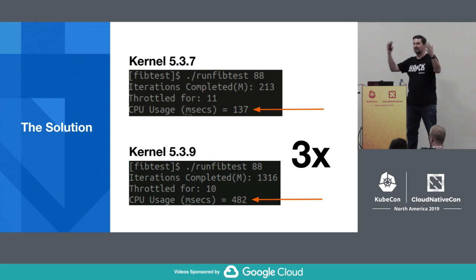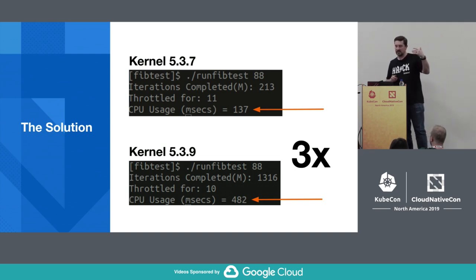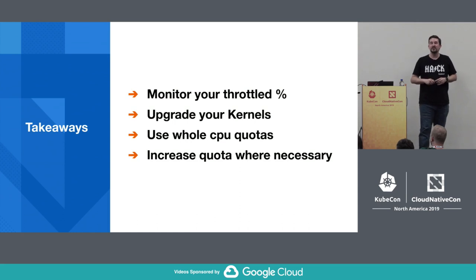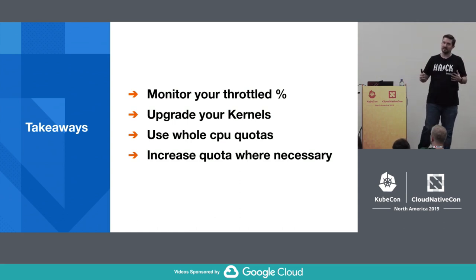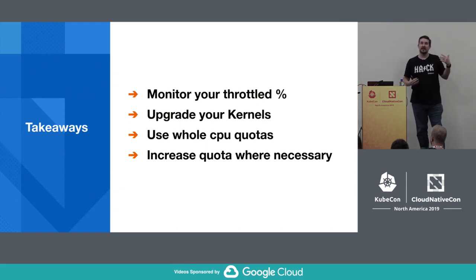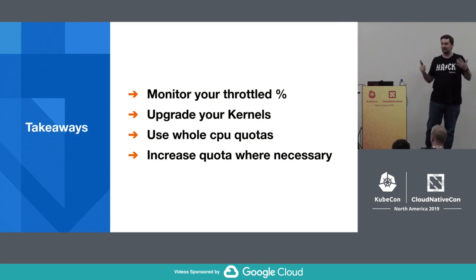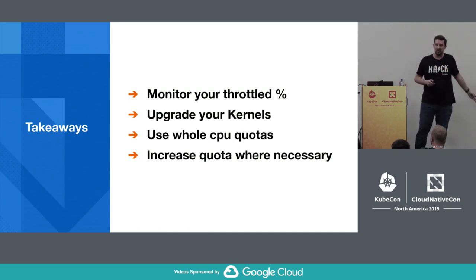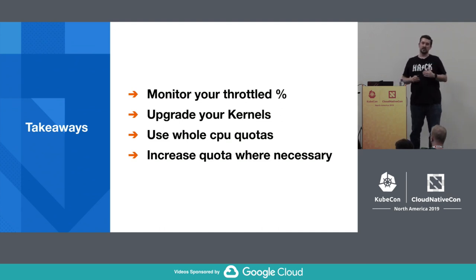What happened to FibTest after the fix? On our 88-core example with 50ms quota × 10 periods, we previously got 137ms of CPU usage. After this change, we're getting 482ms — almost a 3x increase in CPU time that application can use across all 88 cores. Takeaways: monitor your throttled percentage (delta nrthrottled / delta nrperiods) — the most application-agnostic metric. Upgrade your kernels. Use whole CPU quotas to mitigate this if you can't upgrade. And increase the quota where necessary.